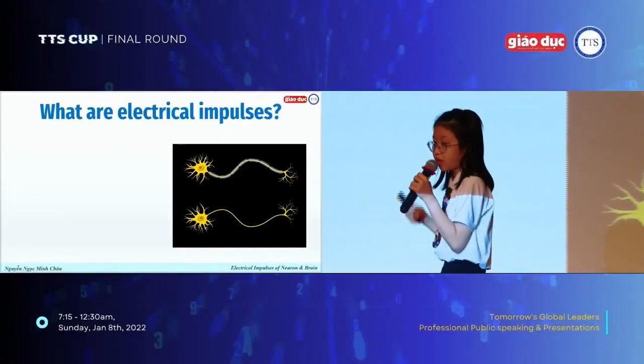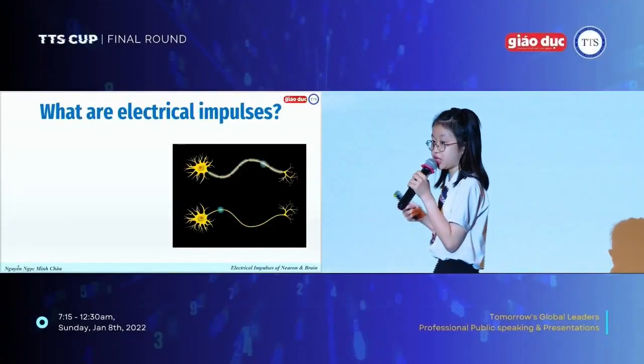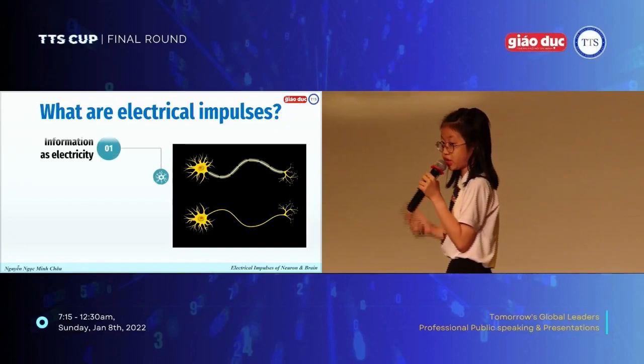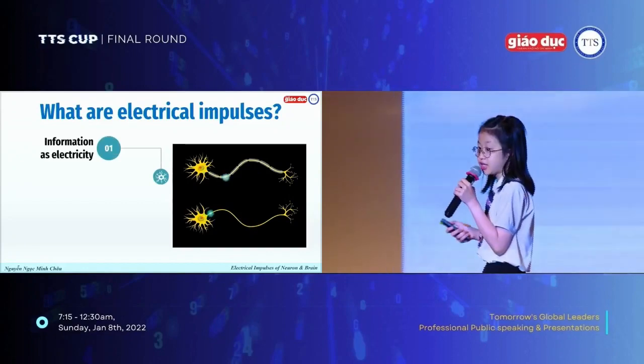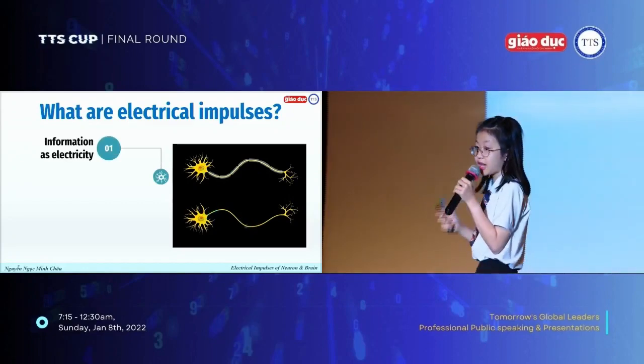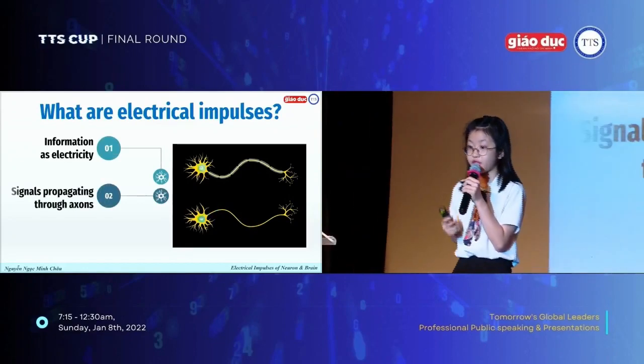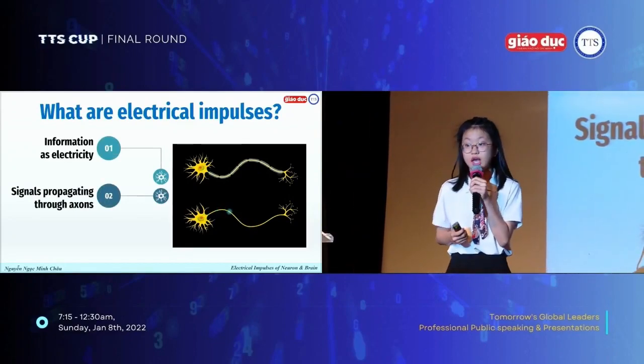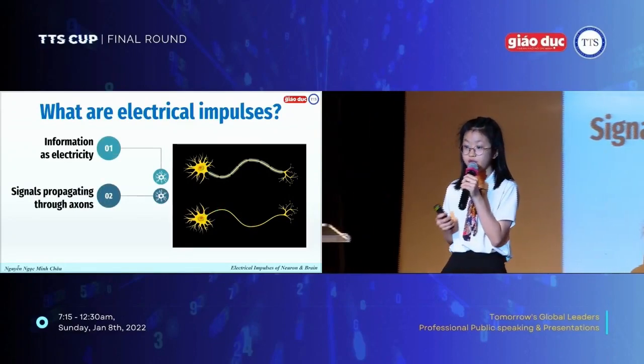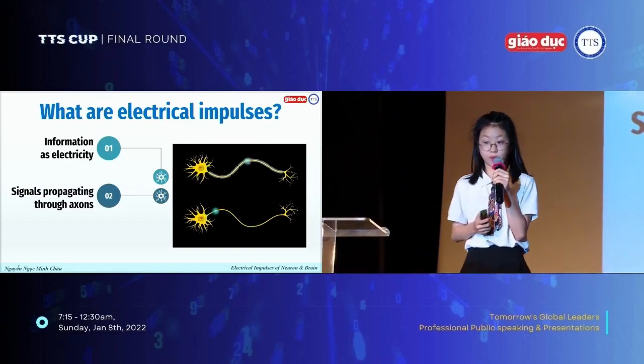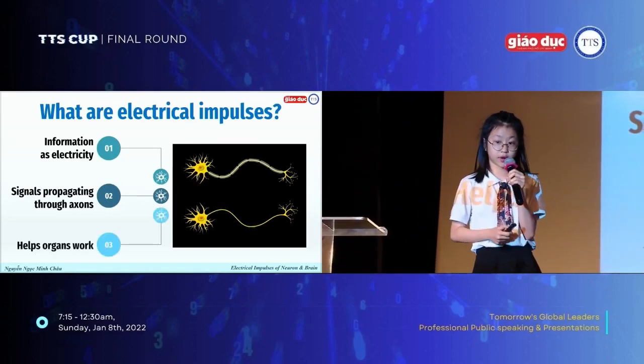Electrical impulses are information under the form of electricity. These are signals that propagate down through the axons and use coded information to help our organs work.